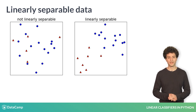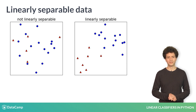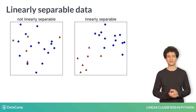On the other hand, in the right-hand figure, we could divide the two classes with a straight line, so it's called linearly separable. So, if logistic regression and linear SVMs are both linear classifiers, how are they different? That's what Chapter 2 is all about.